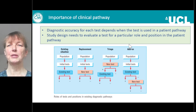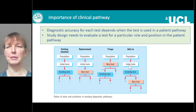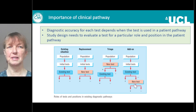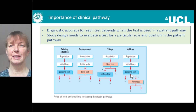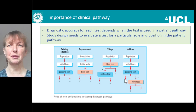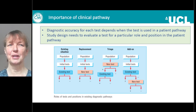Another design is where we want to use the new test as an add-on to the existing test. We have our population of patients with initial tests forming the inclusion criteria. People have the existing test, and then based on their results we decide who has the new test. In this diagram, everyone who's negative with the existing test has the new test — we're hoping to find people with a disease that were missed by the existing test. We could also add the new test for those who test positive with the existing test, to sort out true positives from false positives.